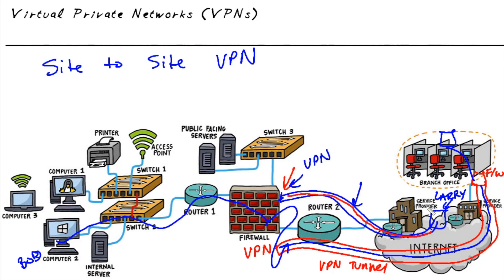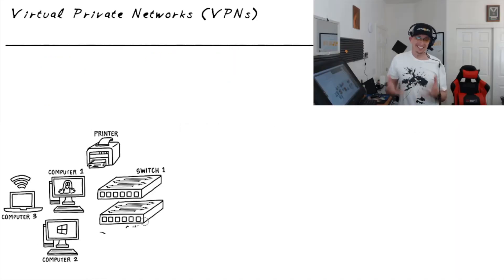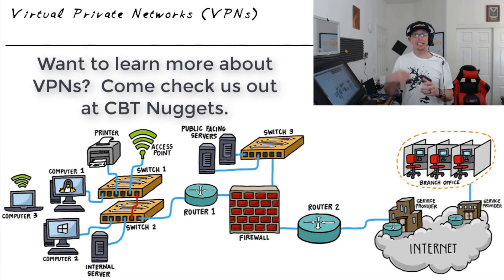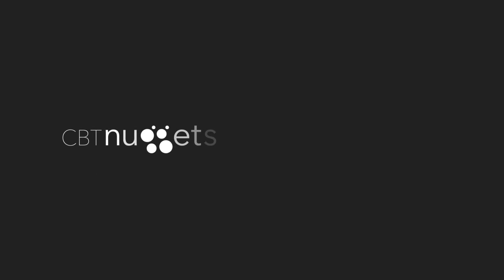When an individual computer — whether a mobile device or a laptop — builds a VPN tunnel to a head-end site, that's referred to as Remote Access VPN. One of the key benefits is that all traffic is encrypted from Larry's machine through the VPN tunnel all the way to the other end, in this example the firewall. We've learned about site-to-site and remote access VPNs and the value they bring — encrypting data so that anyone eavesdropping can't make sense of it, keeping our data secure.